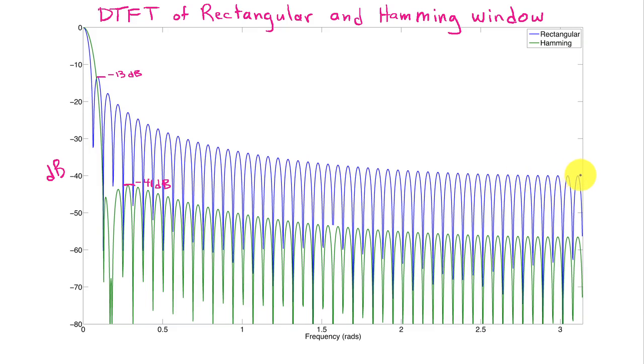Looking far away from the main lobe, I see that the rectangular window side lobes approach about minus 40 dB as they roll off, whereas the hamming window side lobes approach about minus 56 or minus 57 dB. So there's about a 17 dB gain in dynamic range here between these two windows.